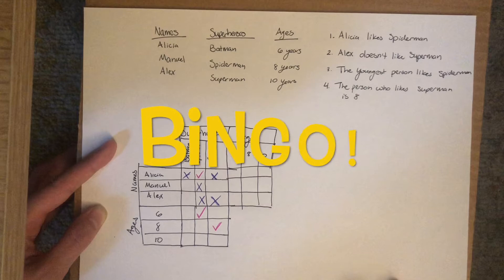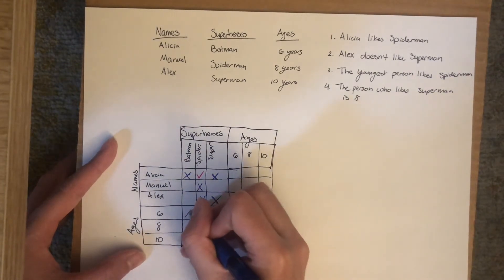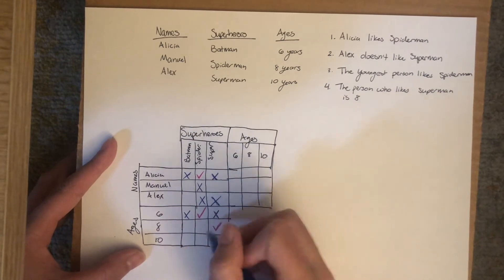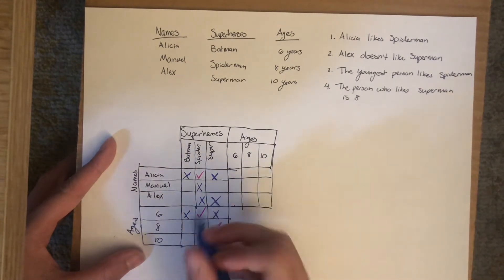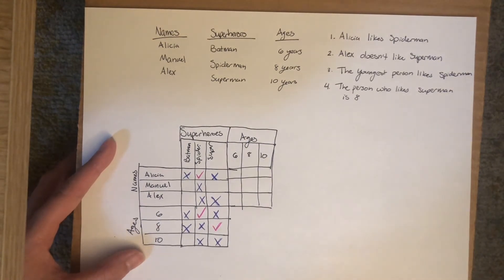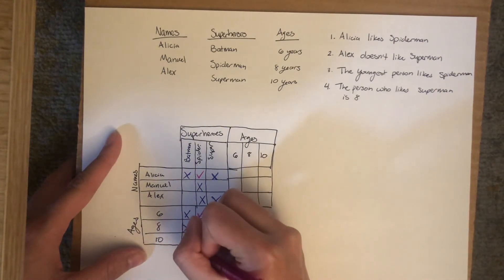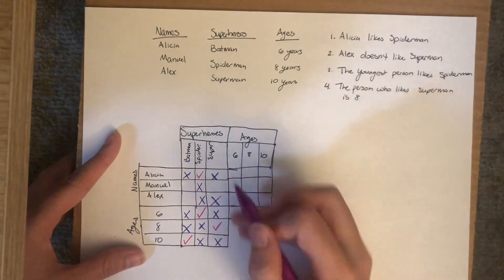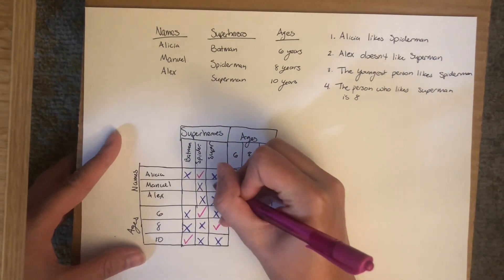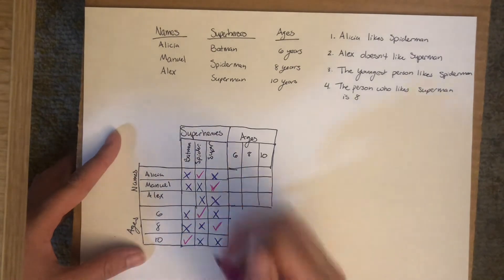This is almost like bingo — we're X-ing off our rows and columns. For ages and superheroes: whoever is six likes Spider-Man, so they do not like Batman or Superman. Wherever we have a checkmark, we put X's in that row and column because we've already found that match. Once done, in the grid where ages and superheroes intersect, there's only one box left — ten and Batman — so those must go together. And looking at names and superheroes, the only spot left for Manuel is Superman, so Manuel likes Superman. That leaves only one spot: Alex and Batman.